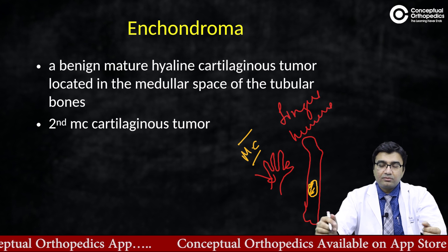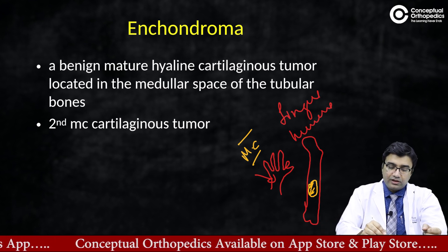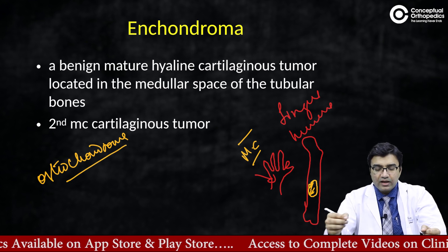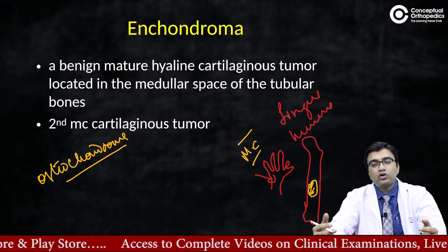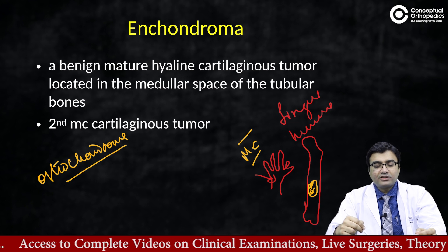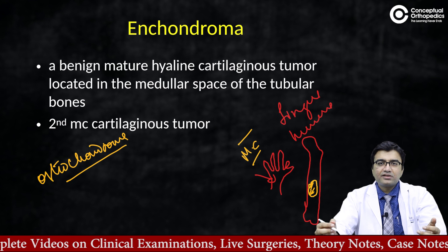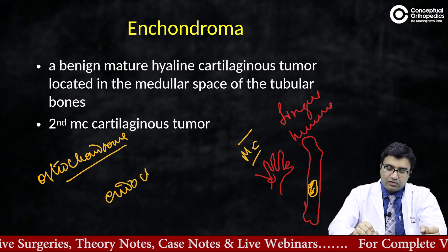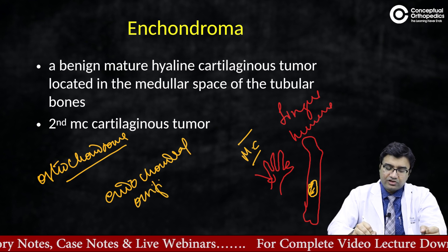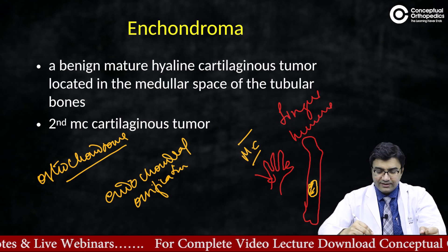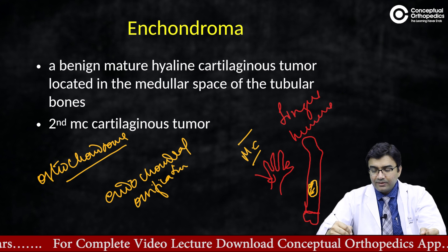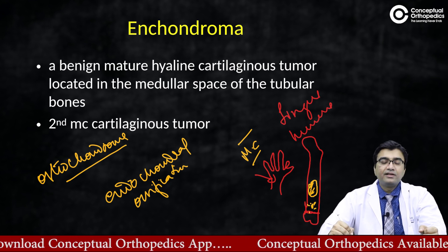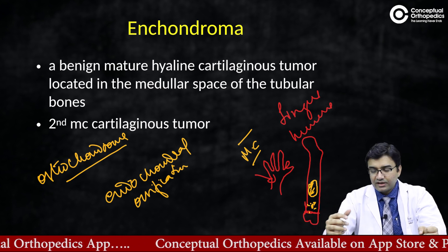When it comes to the most common cartilaginous tumor overall, it is the osteochondroma — the most common cartilaginous tumor and also the most common benign tumor. Enchondromas are the second most common cartilaginous tumor. There are different theories about how they arise; one theory is that it is due to a defect in endochondral ossification. Normally it is seen near the metaphyseal area, where a defect in ossification leaves cartilage remnants inside, which then present like a tumor.